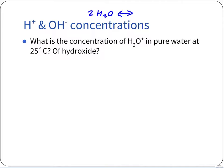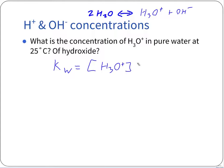The reversible reaction gives hydronium H₃O⁺ plus hydroxide OH⁻. We're trying to figure out what the concentration is. We know from our KW equation that it's going to be equal to the concentration of H₃O⁺ times the concentration of hydroxide.